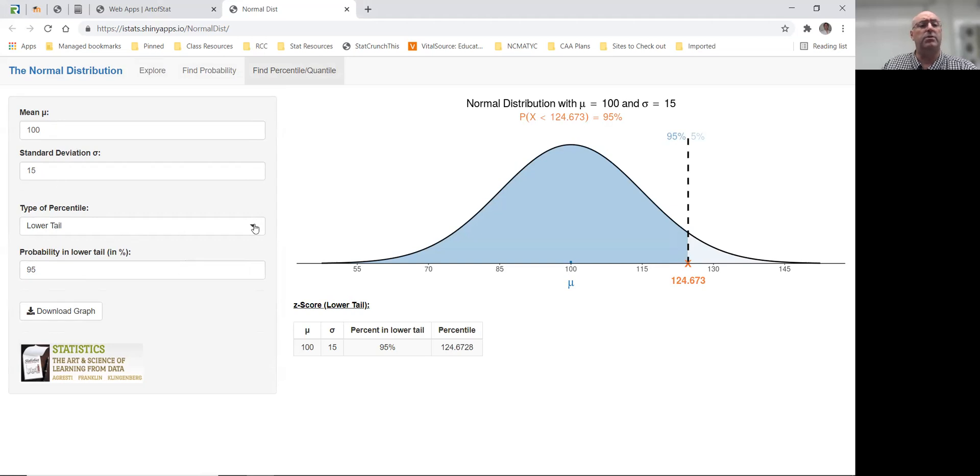We can choose to do a lower tail, which would give us the percent less than a particular percentage, an upper tail, or a two tail. Really what we want to do for percentile is always a lower tail because we want the percent less than that amount.